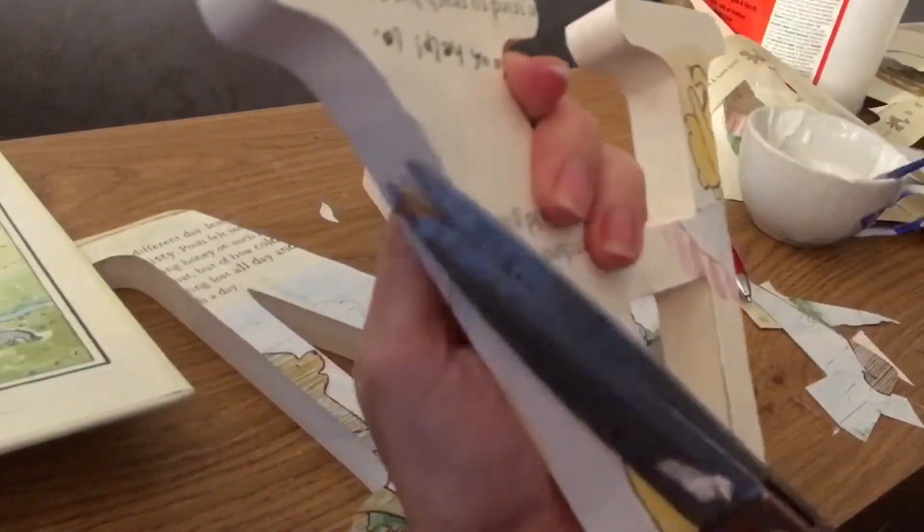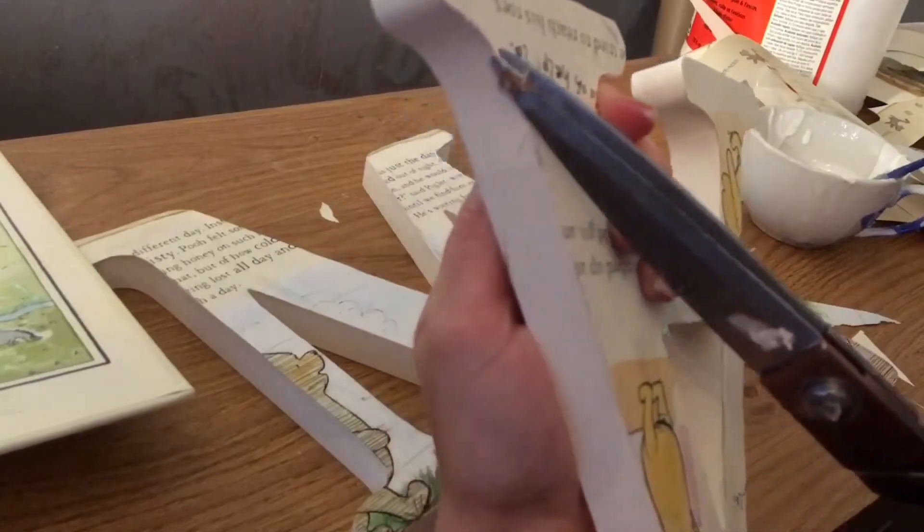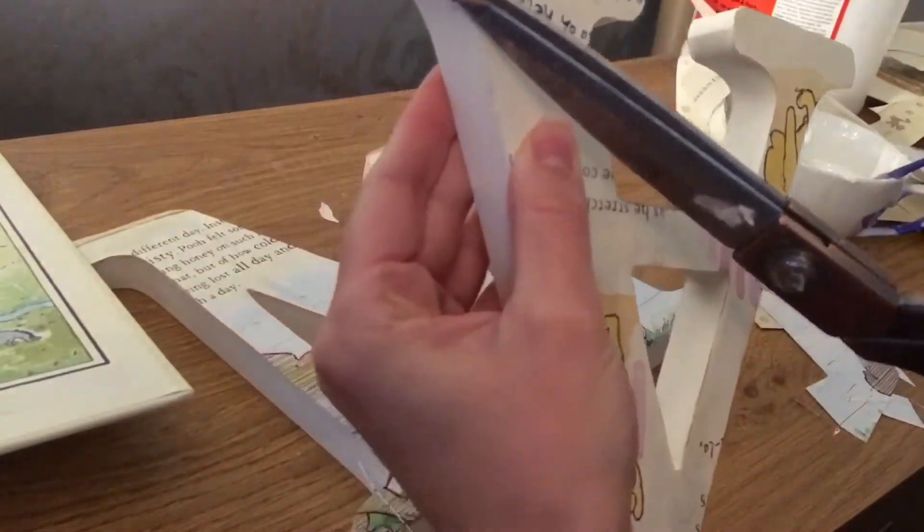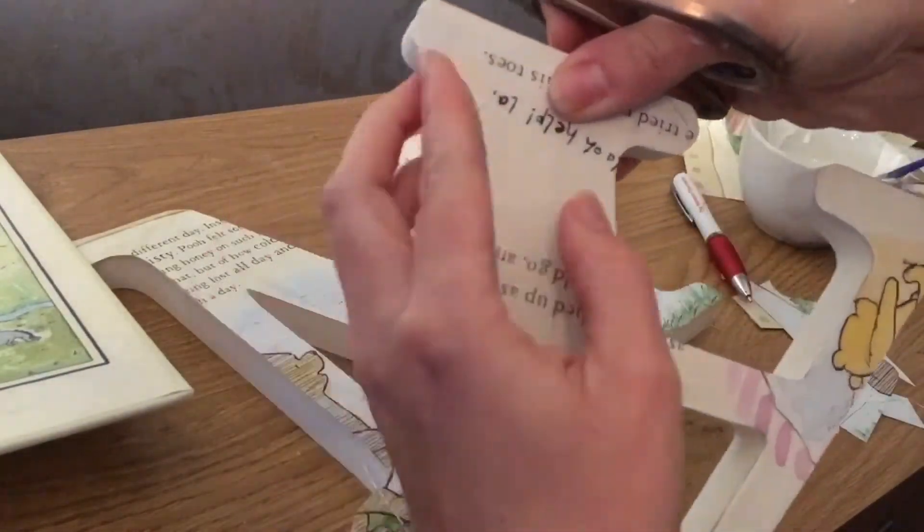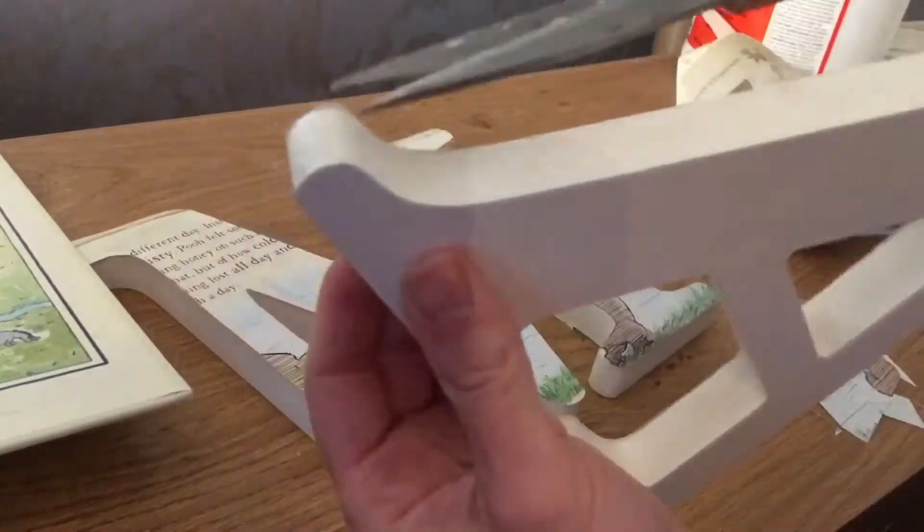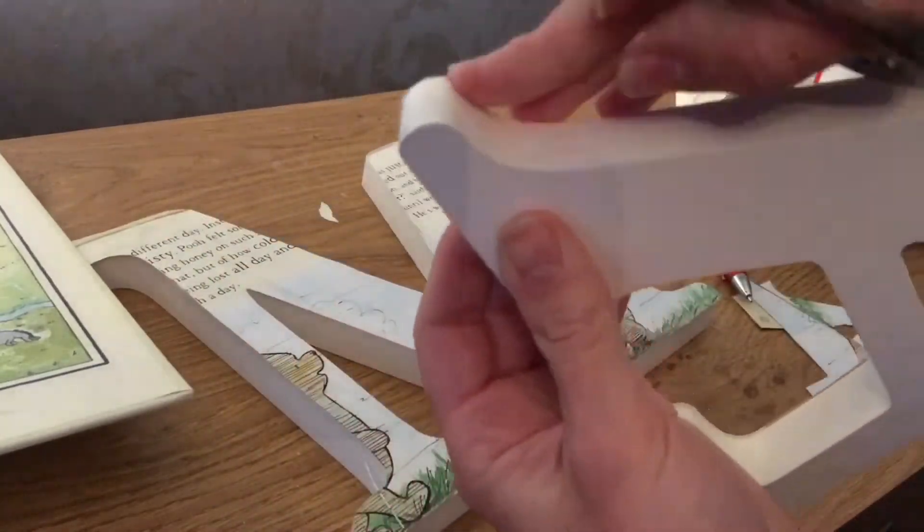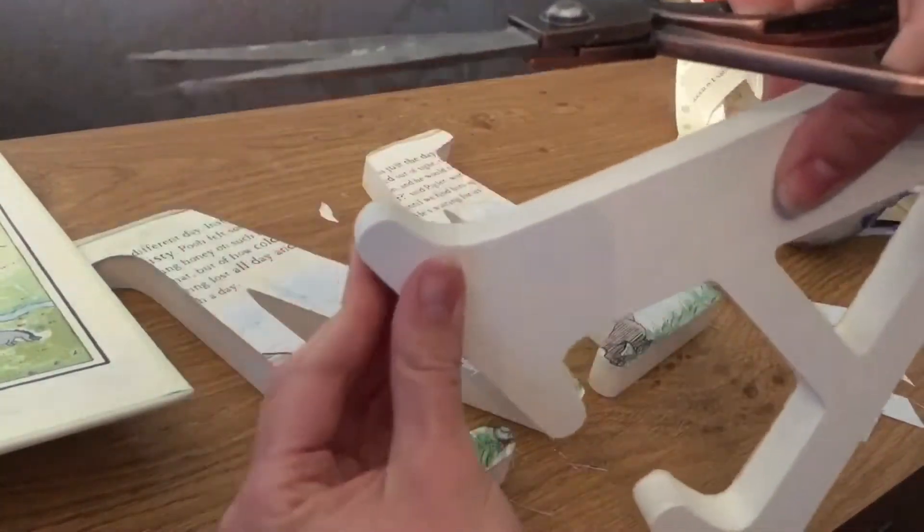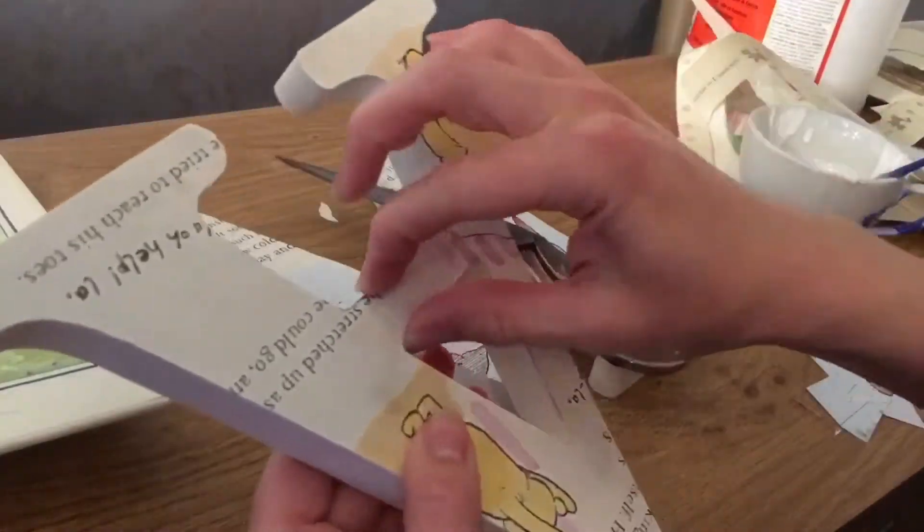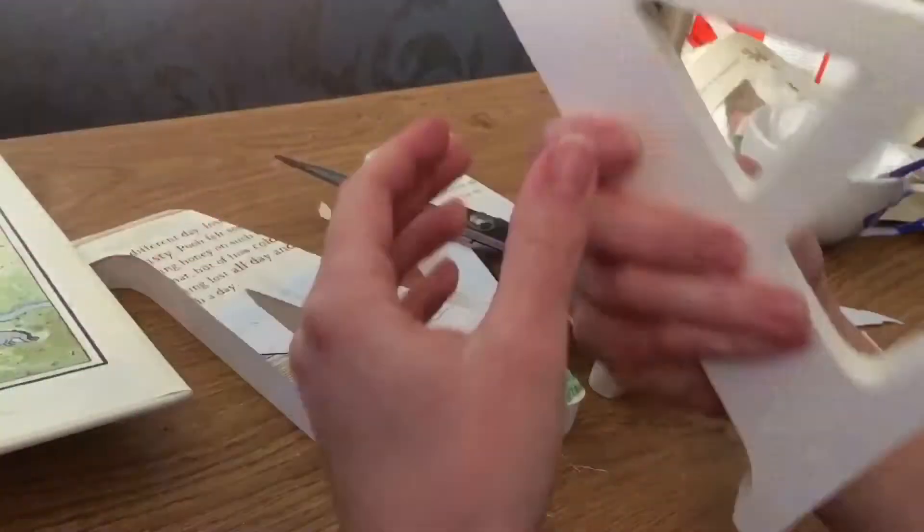You won't get a perfect straight edge. You'll probably get little pieces of paper trailing over. So if you just push them down it will blend in nicely, especially when you add the Mod Podge layer on top of it. It will all blend in.